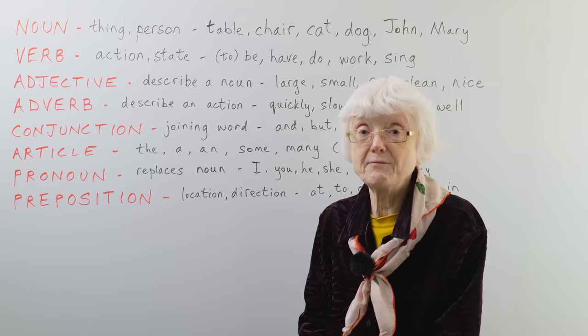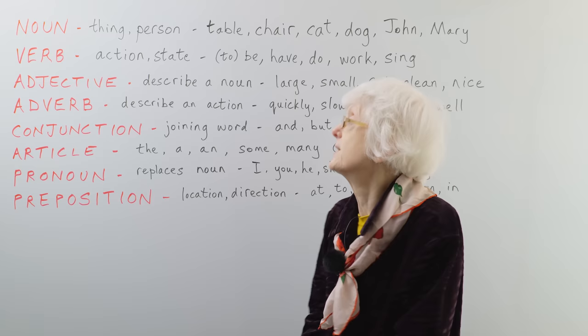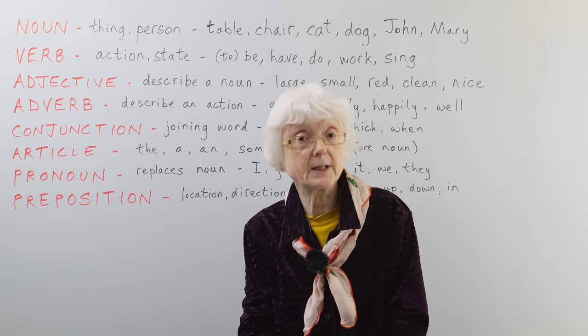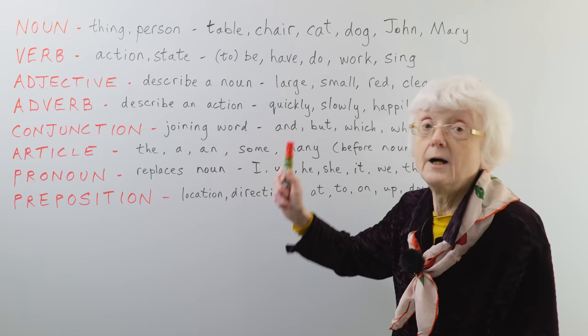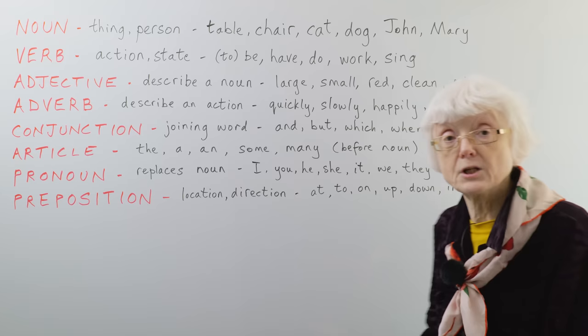Starting with nouns, which are usually things or people, or they could be abstract ideas as well. Things like table, chair, cat, dog, and people. People's names, John, Mary, with a capital first letter.